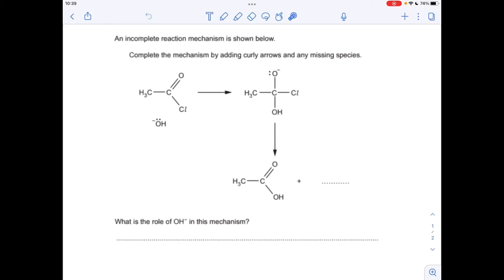Okay, so we'll make a start by adding some curly arrows. If we have a look at what's going on in this step here, you can see that we've got the C double bond O changing to a C single bond O. There's a minus sign on that O there, and the OH group, this OH group, has attached itself to that carbon.